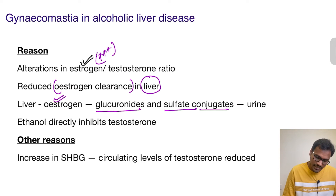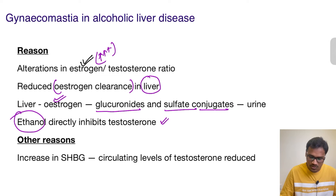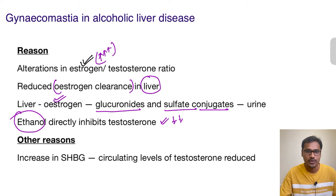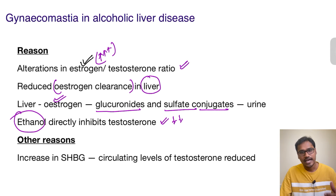There is also a direct action of ethanol, that is the alcohol, on the levels of testosterone. So obviously the testosterone levels are coming down and estrogen levels are going up. There is an alteration in this ratio leading to a high rise in estrogen, and estrogen is the hormone responsible for breast enlargement, causing gynecomastia in males with alcoholic liver disease.